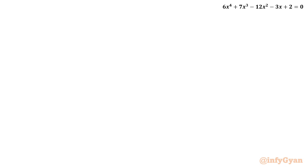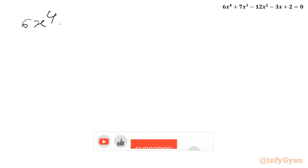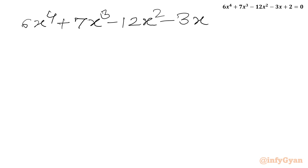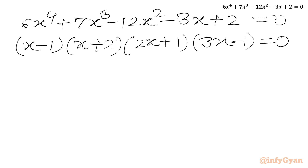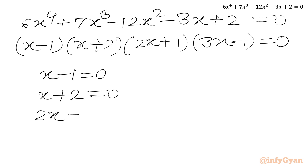So the last two factors are (2x+1) and (3x−1). We can now write our full quartic equation: 6x⁴ + 7x³ − 12x² − 3x + 2 = 0, factored as (x−1)(x+2)(2x+1)(3x−1) = 0. Now we apply the zero product rule, writing four equations: x−1=0, x+2=0, 2x+1=0, or 3x−1=0.